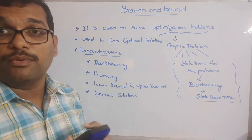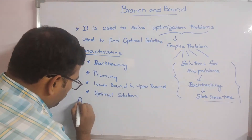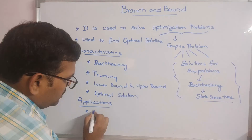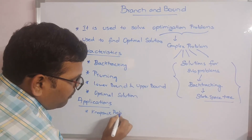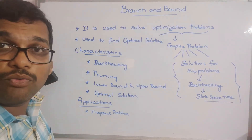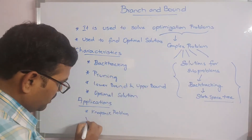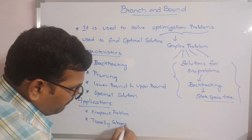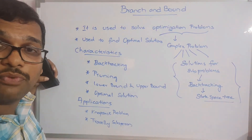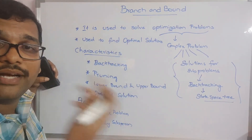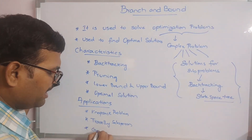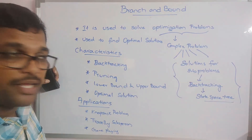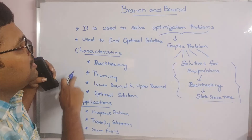Now the applications — which kinds of problems can be solved using Branch and Bound? The first one is the Knapsack problem, which we have already solved and can solve using B&B to get an optimal solution. The next one is the Traveling Salesperson Problem. Additionally, game playing is one more problem. The N-Queens problem and all backtracking applications can also be solved using Branch and Bound.